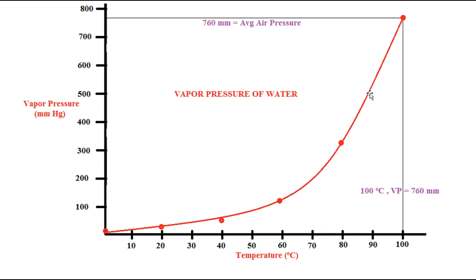We can boil water at greater than 100 degrees in a pressure cooker, and in the mountains the air pressure is less, so water boils at about 90 degrees. That's pretty much the effect. Hopefully this cleared up the presentation from today, and we will have a lab on Thursday to take care of this. Okay, catch you later.